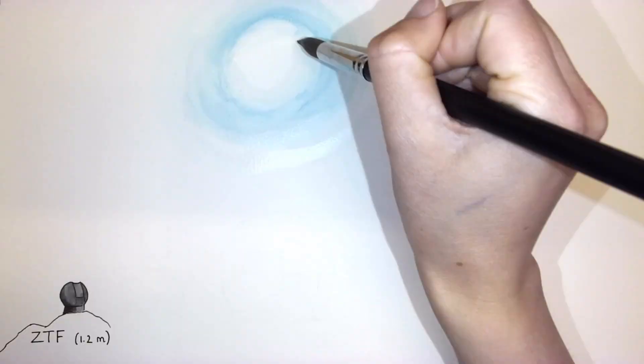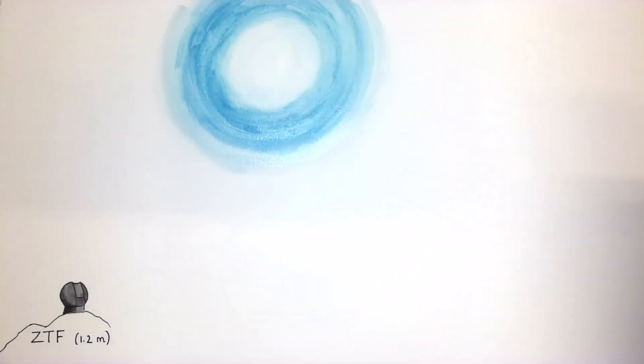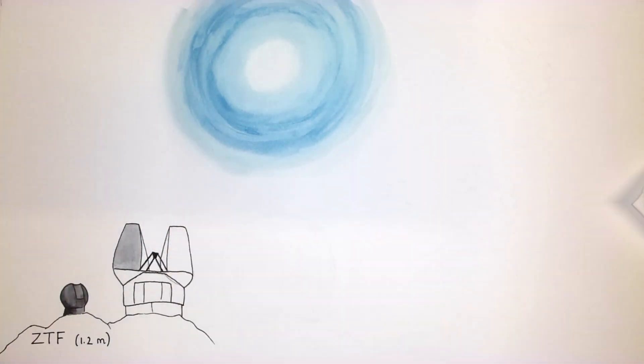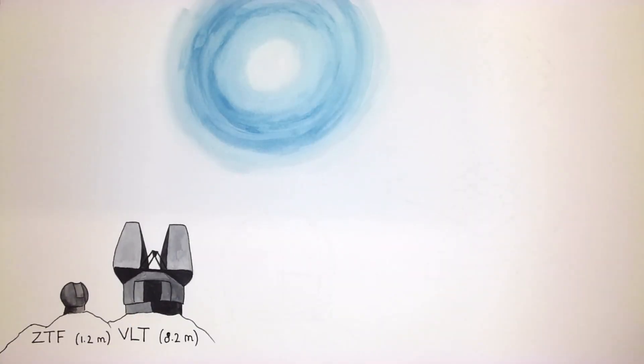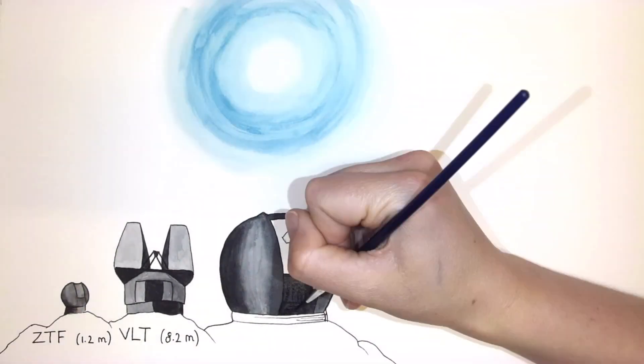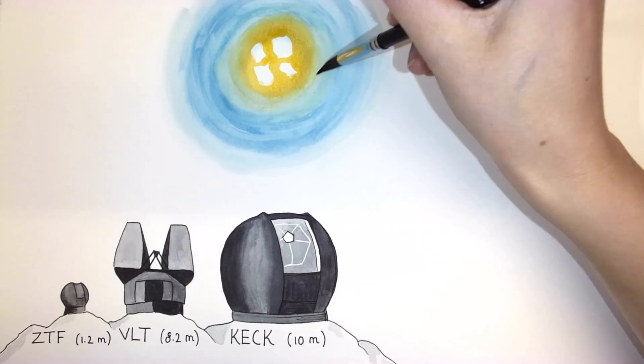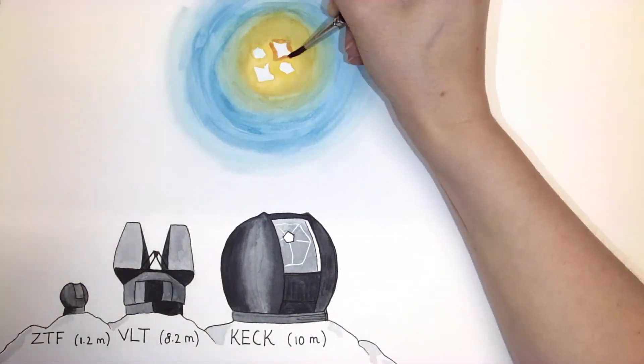While ZTF allowed us to discover Supernova Zwicky because of its anomalous brightness, it was not powerful enough to resolve the four separate images. Supernova Zwicky just appeared as a dot. We then turned to larger observatories, such as the Very Large Telescope in Chile, to learn more about the supernova. And it was only when we observed Supernova Zwicky with the Keck telescope in Hawaii, equipped with adaptive optics technology, that we could see the four separate images.